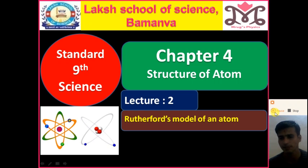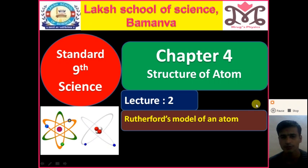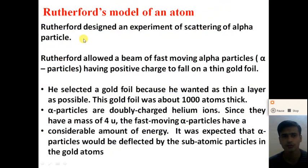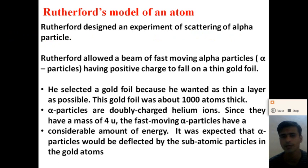After that, Rutherford made an experiment of alpha scattering and gave a model of an atom. Today in this video we will discuss Rutherford's model of an atom. Rutherford designed an experiment of the scattering of alpha particles. Alpha particles are scattered from a golden foil.